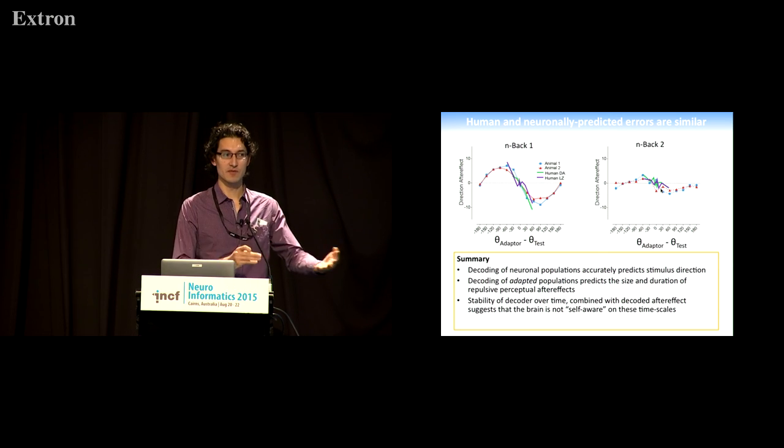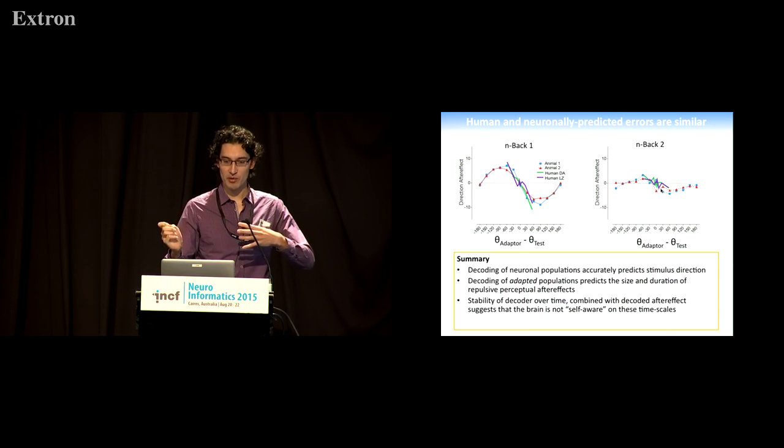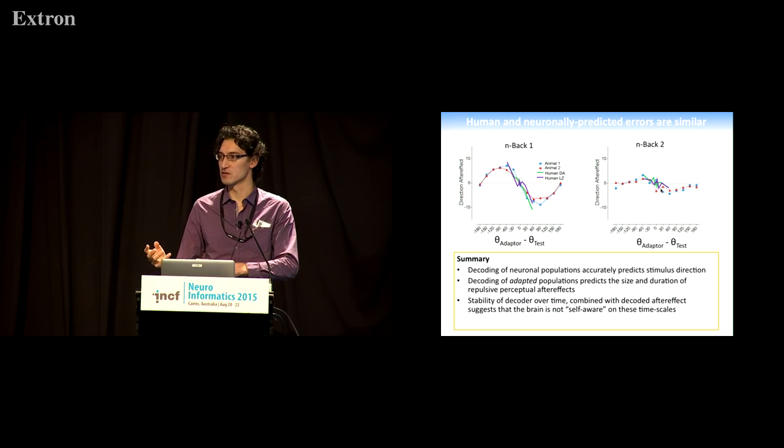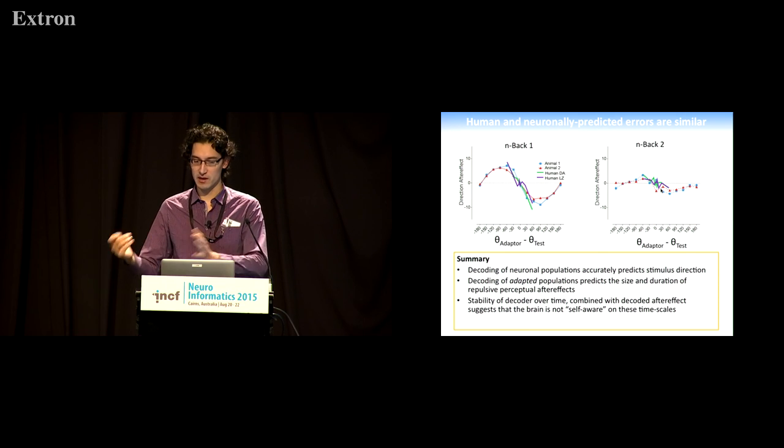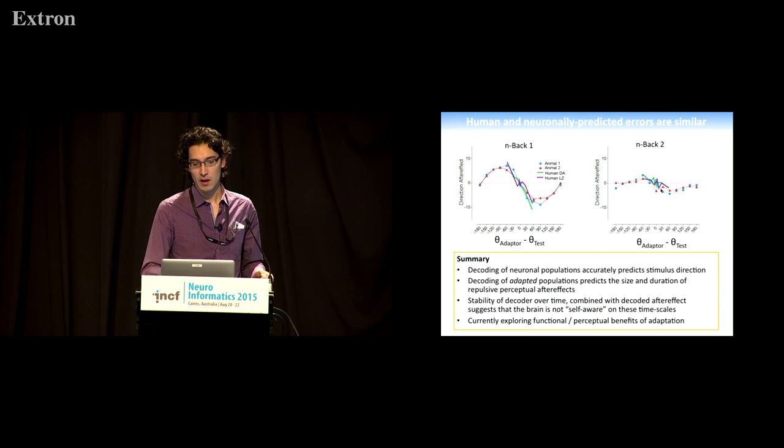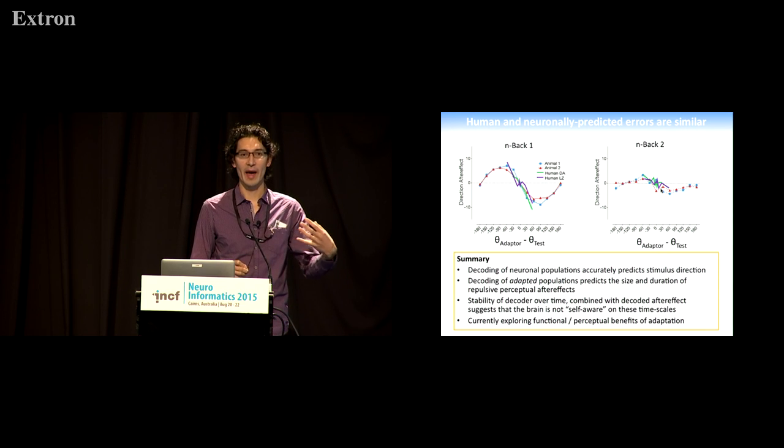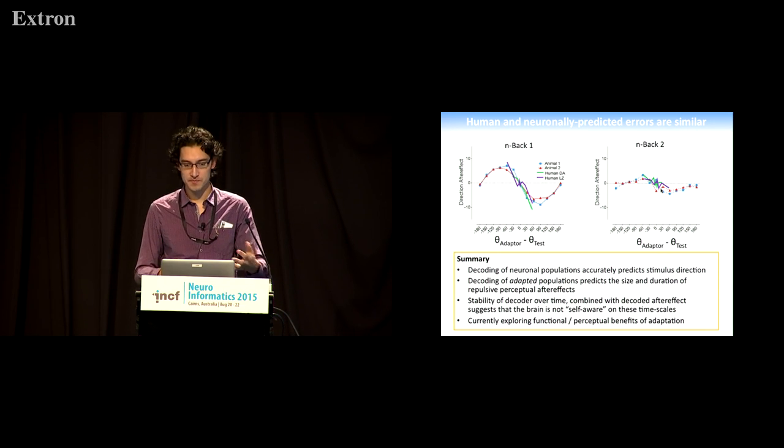The brain's sensitivity is changing, but the brain doesn't have the ability to actually take that into account on short time scales of fractions of a second, and that can account for our perceptual errors. What we're currently exploring is, given that we have these errors in perception, errors in decoding, what are the functional or perceptual benefits that might arise from adaptation?